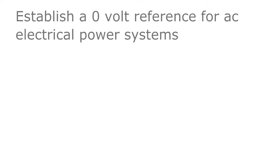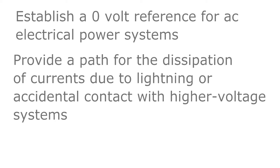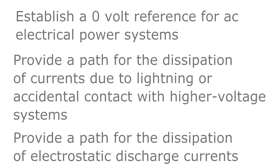Even though you, as an RCDD, may have no authority over the grounding electrode system, it is a critical component for your telecommunications bonding infrastructure. The purpose of the AC grounding electrode system is to: one, establish a zero-volt reference for an AC electrical power system; two, provide a path for the dissipation of currents due to lightning or accidental contact with higher voltage systems; and three, provide a path for the dissipation of electrostatic discharge currents.